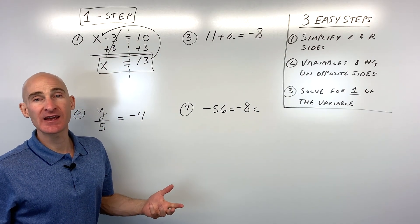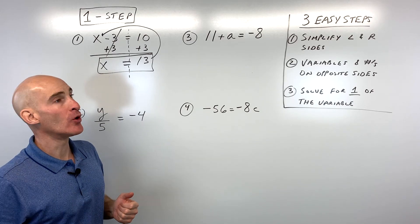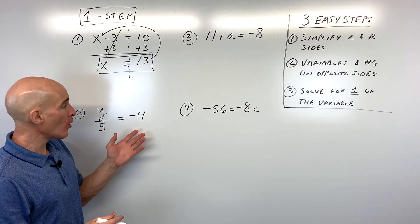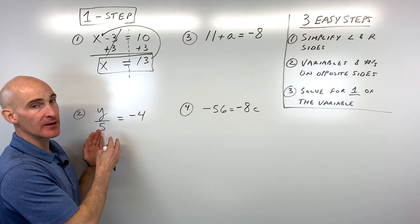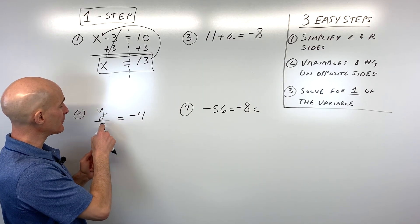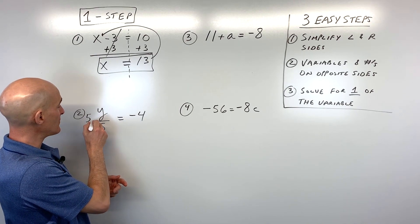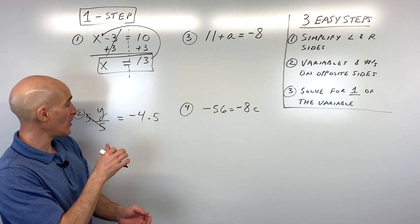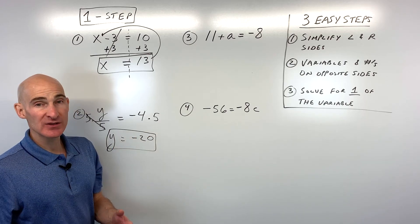These one-step ones are kind of simple — you could probably guess the answer just by looking. But as we get into two-step and multi-step equations it gets more challenging. For number two, y divided by 5 equals negative 4. Following the steps, there's nothing to simplify. The opposite of dividing by 5 is multiplying by 5, so multiply both sides by 5. Five divided by 5 is 1, so we get y equals negative 20.